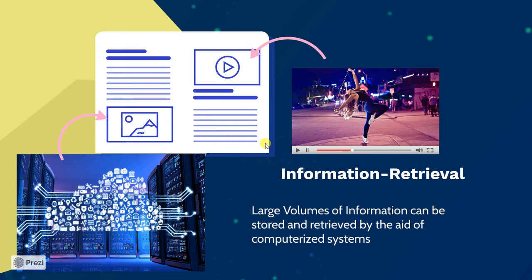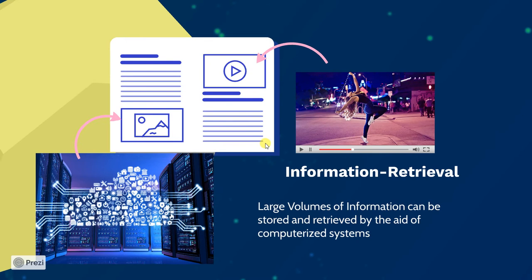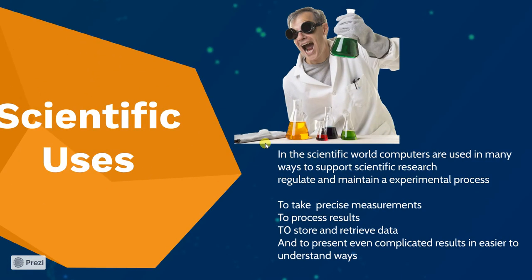Scientific uses: in the scientific world, computers are used in many ways to support scientific research. They are used to regulate and maintain experimental processes — for instance, if we need specific conditions for an experiment to work, computers are used to keep that environment stable, maintaining it at a specific atmospheric condition. We also use computers to make precise measurements in many cases.